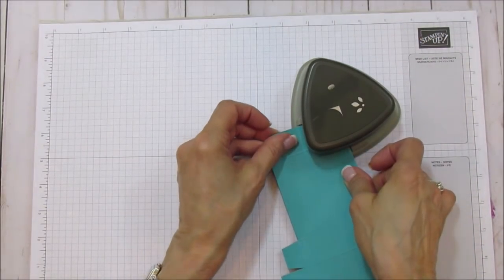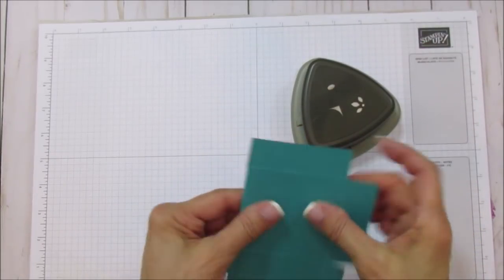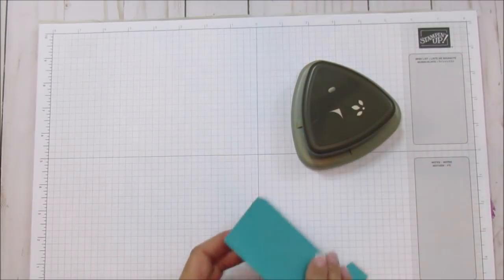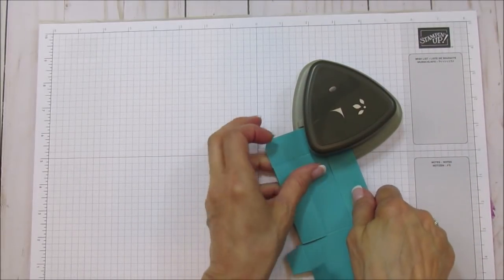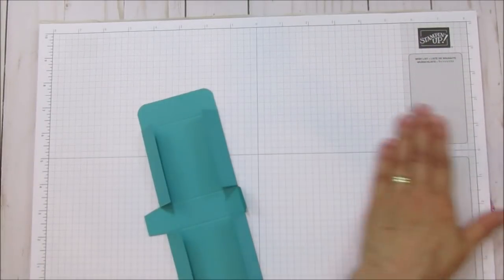We're going to do these two. So we have our corners rounded. If you have a little corner rounder, just use that.